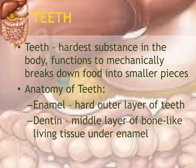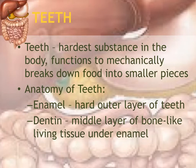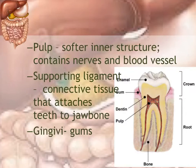Dentin is the inner, middle layer of the teeth. It is made of the same material as bone — it is a bone tissue. It is still hard but softer than the enamel. The soft inner portion of the tooth is called the pulp, and this is where the nerves and blood vessels are.